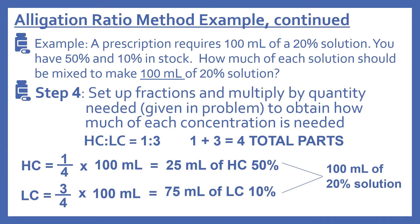For our HC, the ratio value is 1, so our fraction will be 1 over 4 — because there are four total parts — times 100 milliliters. That gives us 1 times 100 divided by 4, which equals 25 milliliters of the high concentration, which is the 50% solution. For the low concentration, our ratio value is 3, so 3 over 4 times 100 milliliters: 3 times 100 is 300, divided by 4 gives us 75 milliliters of the low concentration, the 10% solution. The 25 milliliters and 75 milliliters add up to 100 milliliters, so mixing 25 mL of 50% solution and 75 mL of 10% solution gives us 100 milliliters of 20% solution.